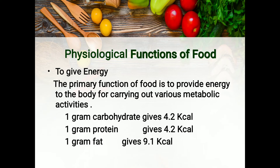भोजन के तीन मुख्य पोषक तत्व जो ऊर्जा प्रदान करते हैं वो हैं कार्बोहाइड्रेट, प्रोटीन एवं वसा। 1 gram of carbohydrates after digestion gives us 4.2 kcal, 1 gram of protein also gives us 4.2 kcal, while 1 gram of fat gives us 9.1 kcal, which is almost double that of carbohydrates and protein.